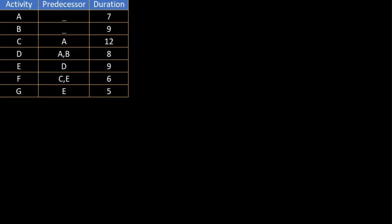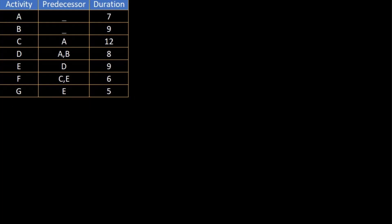In this example we have a project box that has activities from A to G. A and B are independent activities which do not have any predecessors, and C, D, E, F, G start after the completion of one or two activities. They have different durations as well. Firstly we will make a simple diagram, after which we can make a detailed diagram. A and B are the starting activities since they do not have any predecessors.